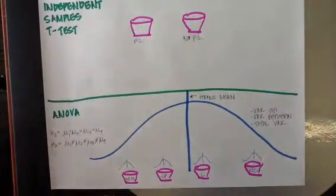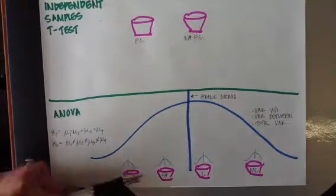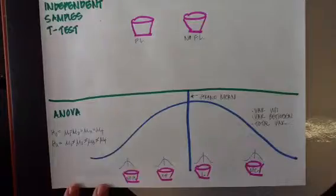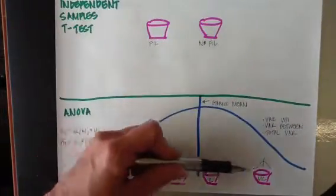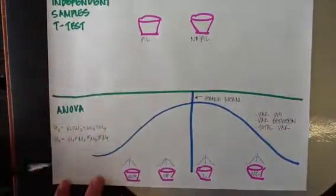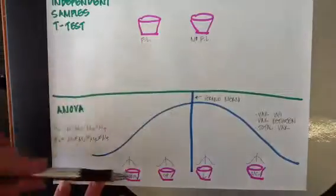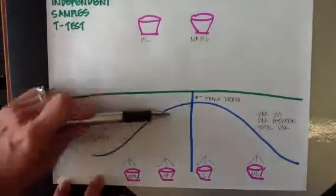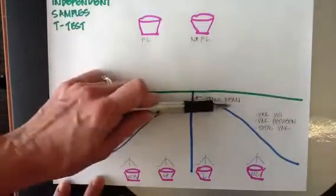So in this particular graphic, you have our four different samples: students who have had no foreign language, Spanish, Latin, and Mandarin Chinese. For each of them, I've tried to represent the distribution of each grouping or sample, as well as the distribution of all four samples put together. The mean of the distribution that represents all four samples combined is known as the grand mean.